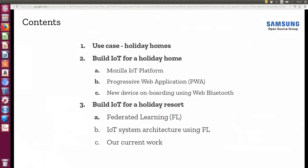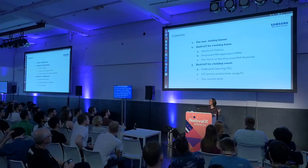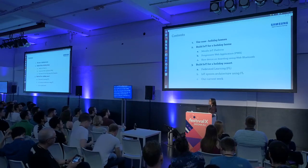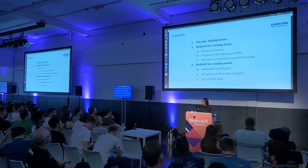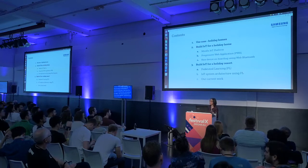Our use case is holiday homes in a holiday resort. Most of you probably spend holidays and rent a home on a big holiday resort — that's the kind of scenario we're talking about. Our first step is how to build an IoT system for one single holiday home. We use the web of things technology, touching the Mozilla IoT platform, progressive web applications, and Web Bluetooth. Once IoT is built for one holiday home, we'll go further to connect all homes together, introduce some intelligence, and build IoT for the whole holiday resort — always with user privacy in mind.